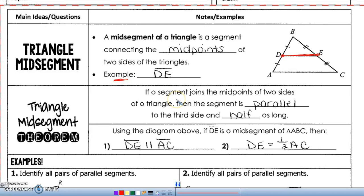The theorem says if a segment joins the midpoints of two sides of a triangle, that's here, then the segment is parallel to the third side, so it's parallel to the base, and it is half as long, so the mid-segment is half the base.